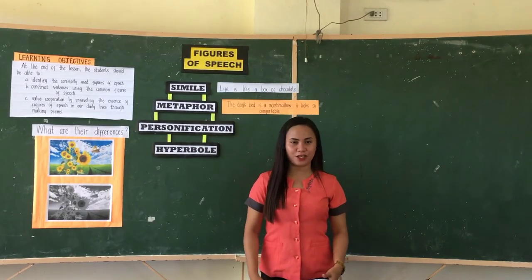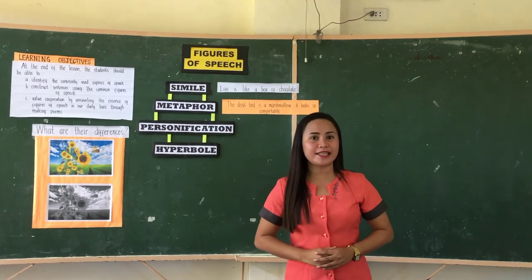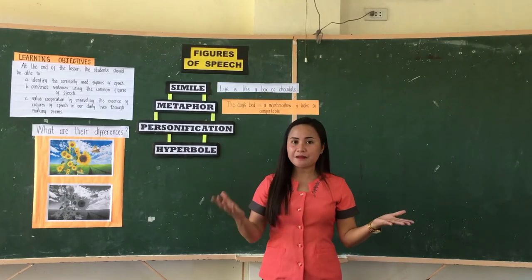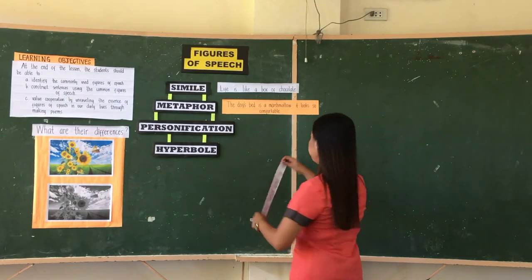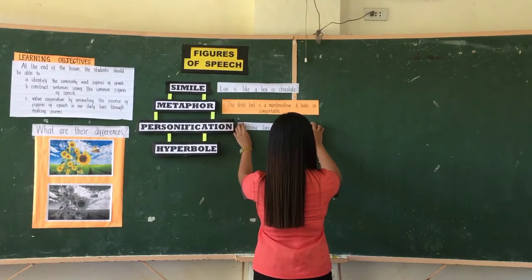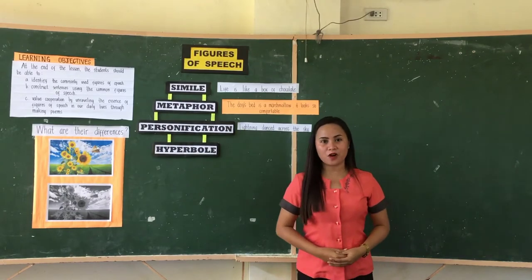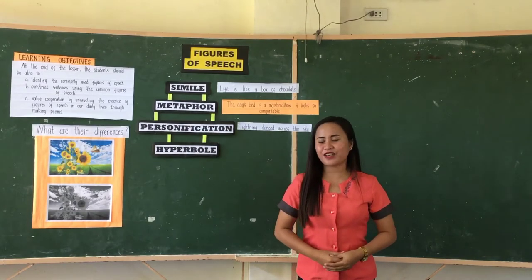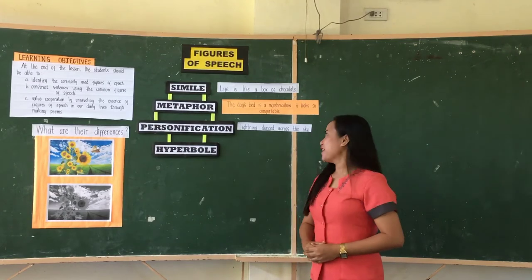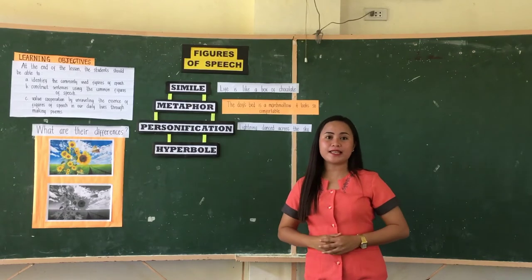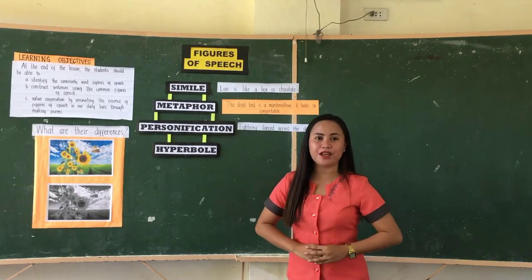What is personification? Personification is a figure of speech that gives human qualities to things, animals, or objects. We have here an example: 'Lightning dances across the sky.' We cannot say that lightning can dance. So we are giving human qualities to the word 'lightning.' So another example of personification?